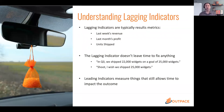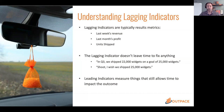A lagging indicator might be last week's revenue, last week's profit, or how many units we shipped. It doesn't give us any opportunity to fix things. If we shipped a million dollars in product last week but wanted to ship two million — too bad, there's nothing we can do. We look at the results and say good or bad, but there's no ability to react.